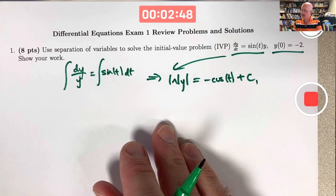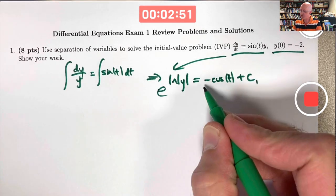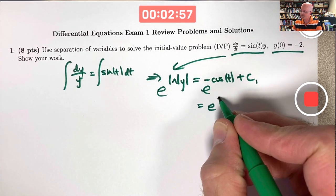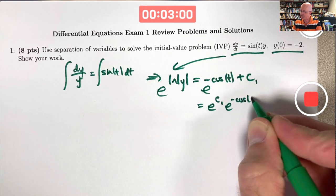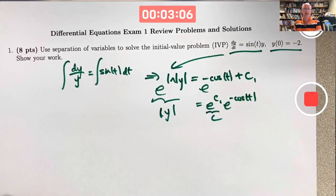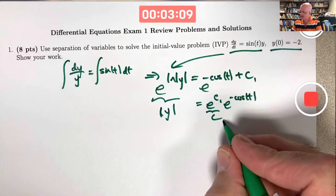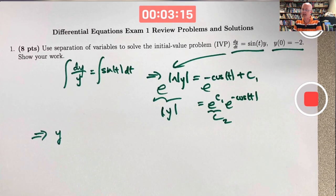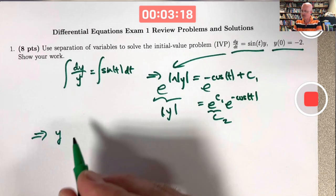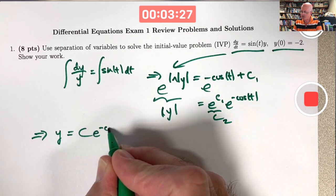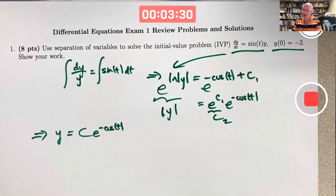We need to solve for y by getting rid of the natural logarithm — exponentiate both sides. Using a property of exponents, the right side becomes e to the c1 times e to the negative cosine of t. Call that c2. The left side becomes the absolute value of y. We can get rid of the absolute value sign — call c2 just c, where c is plus or minus c2. So we have y equals c times e to the negative cosine of t. That would be the general solution.